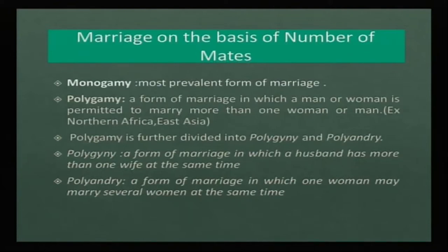Polygamy is further divided into polygyny and polyandry. Polygyny is a form of marriage in which a husband has more than one wife at the same time. In case of polyandry, a woman may marry several men at the same time.